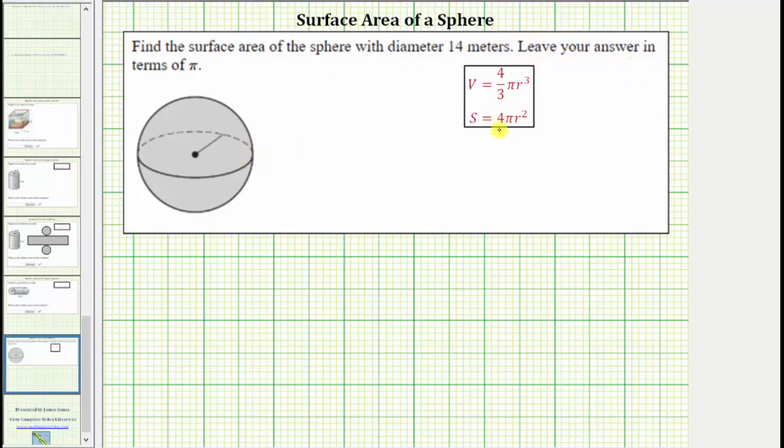The surface area of a sphere is equal to 4πr², where r is the radius of the sphere.